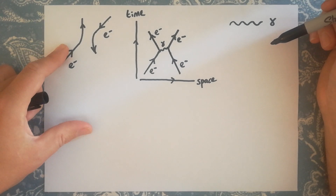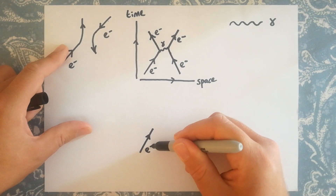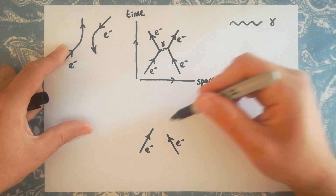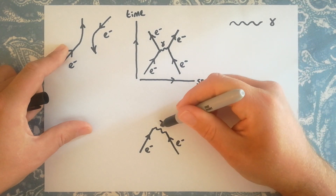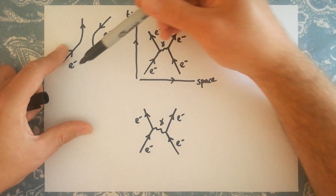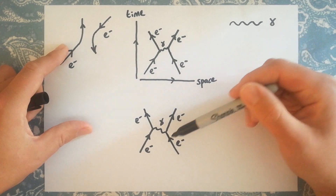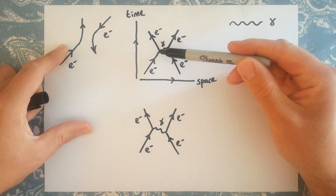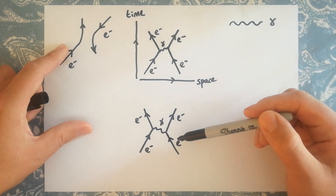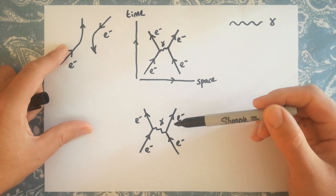We can also draw a second diagram. Instead of the first electron emitting the virtual photon, we could draw the electron on the right emitting the photon. This second diagram represents exactly the same observable process of two electrons scattering from one another. The difference is that the first diagram shows the electron on the left emitting the photon absorbed by the one on the right, while this diagram shows the opposite case.